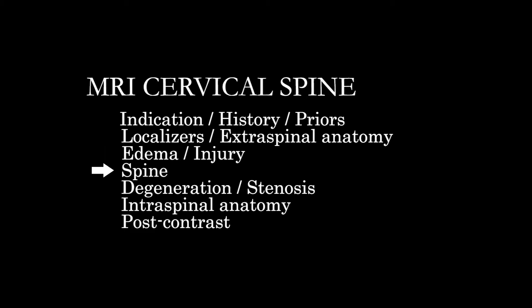Primarily looking at the T2s, we're going to take a look at the spinal anatomy, including alignment, abnormalities of morphology, any injury changes in vertebral body height, things like that. And then eventually assess for degeneration, stenosis, or any sort of spinal stenosis that results from the abnormalities that we're seeing.